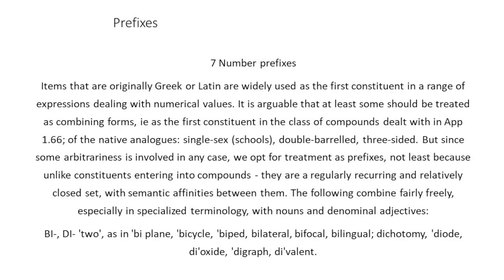The following combine fairly freely, especially in specialized terminology, with nouns and denominal adjectives. 'Bi-' or 'di-' means 2, as in 'biplane,' 'bicycle,' 'biped,' 'bilateral,' 'bifocal,' 'bilingual,' 'dichotomy,' 'diet,' 'dioxide,' 'digraph,' 'diabolical,' etc.